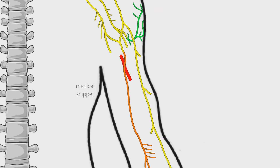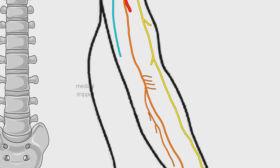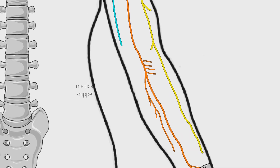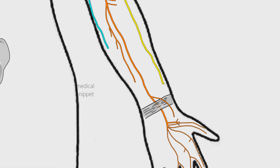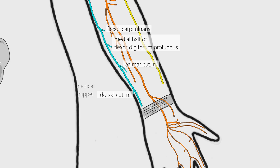The ulnar nerve is a terminal branch of medial cord, so it has nerve fibers of C8 and T1. In the arm it runs down on the medial side of the brachial artery. It passes behind the medial epicondyle of humerus, and then it enters the anterior compartment of the forearm. Ulnar nerve does not supply motor or sensory innervation in the arm. In the forearm it gives off three branches — namely muscular branches, palmar cutaneous branch, and dorsal cutaneous branch. The muscular branch supplies two muscles in the anterior compartment of forearm — namely flexor carpi ulnaris and medial half of flexor digitorum profundus.